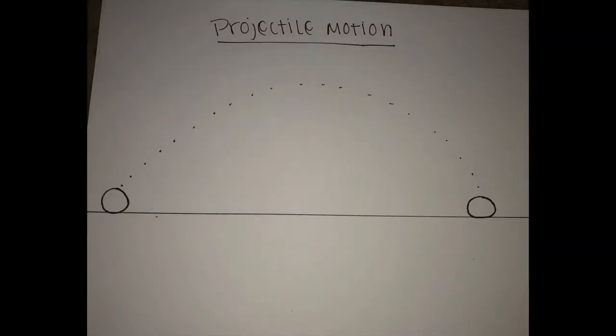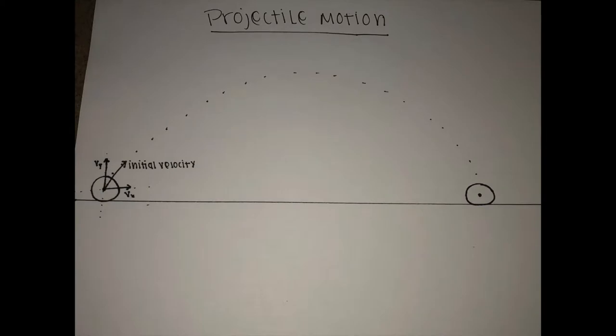An object in projectile motion creates a parabola-like path. The initial velocity sends the object into projectile motion. This initial velocity is a vector which can be split into its horizontal and vertical components.